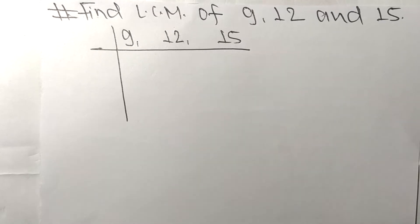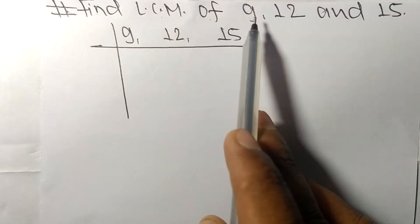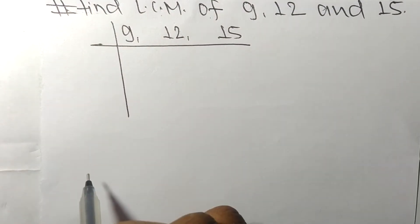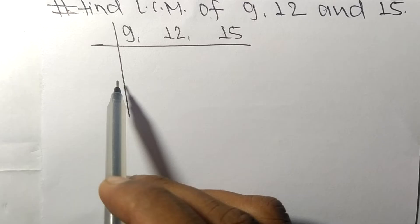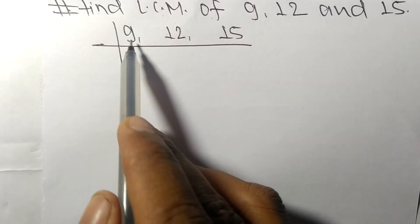Today in this video we shall learn to find the LCM of 9, 12, and 15. To find LCM, we have to choose the lowest number that can exactly divide at least any two of these numbers.